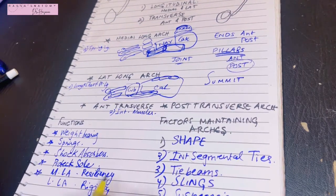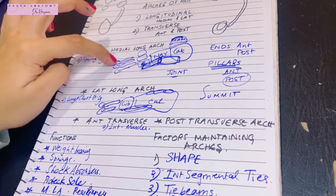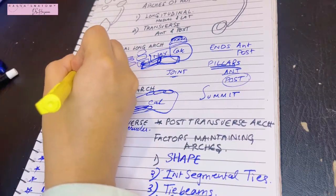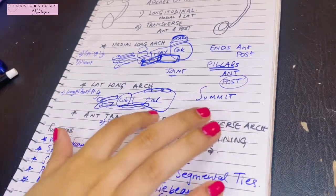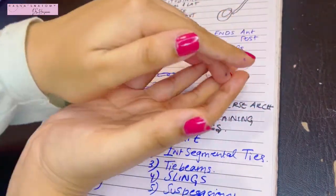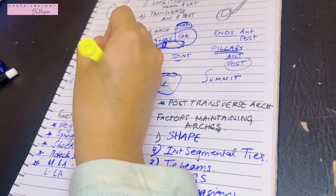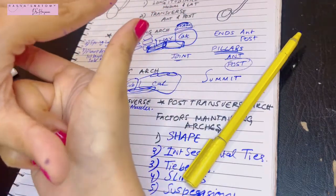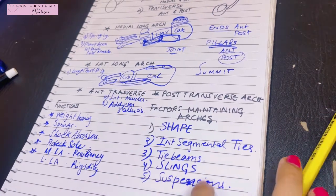Now for the tie beams. For both the medial and lateral longitudinal arches, this role is played by the plantar aponeurosis — a very thick structure running below the entire plantar area, holding the two ends together so the arch can form. Additionally, the first layer of sole muscles contributes. For the transverse arches, the tie beam role is played by the adductor hallucis muscle, which runs transversely to join the two ends.